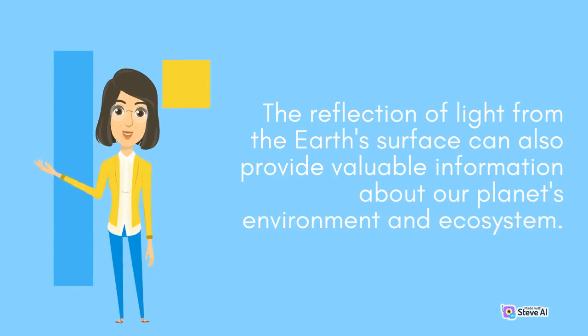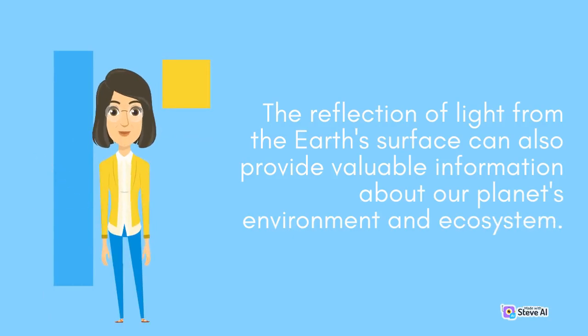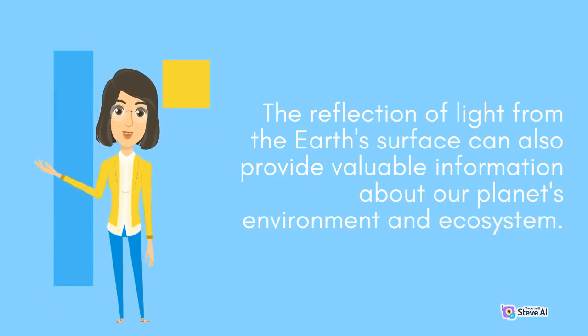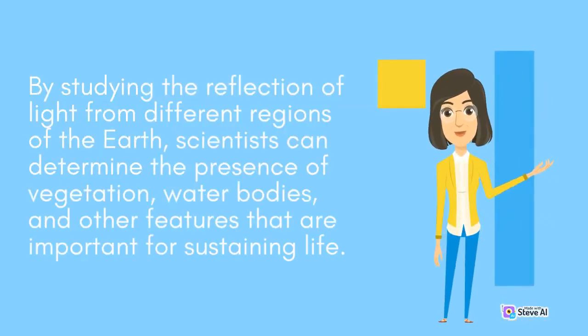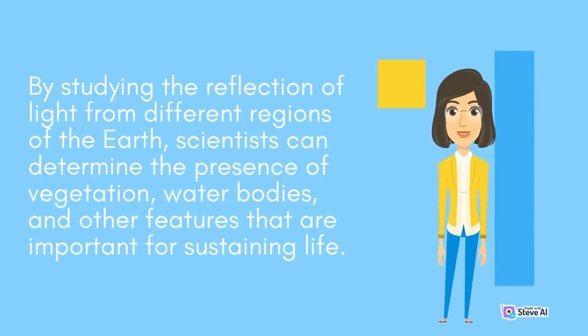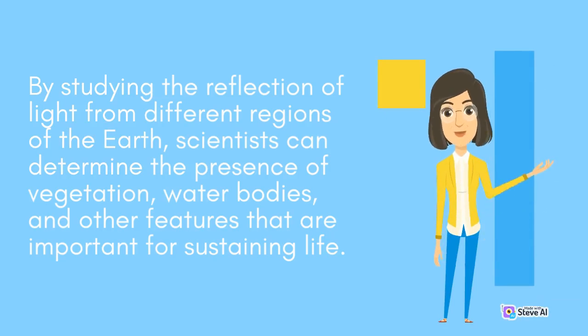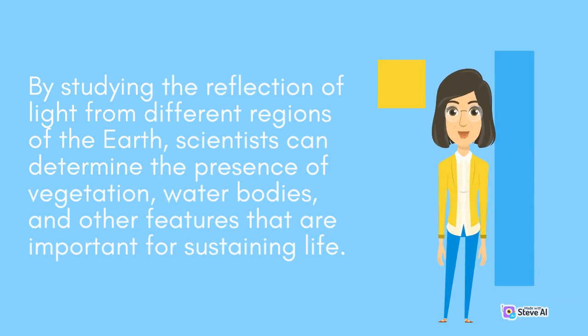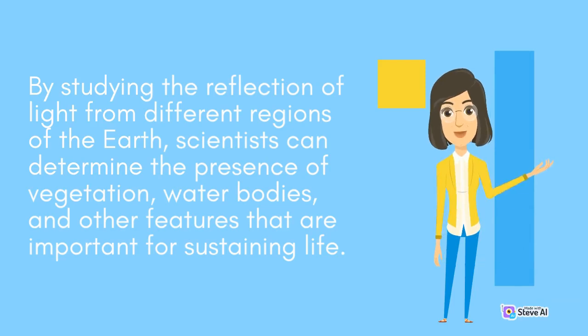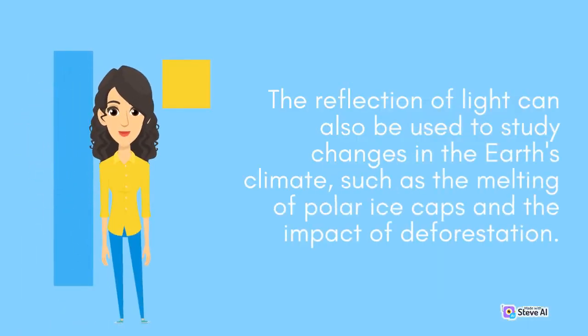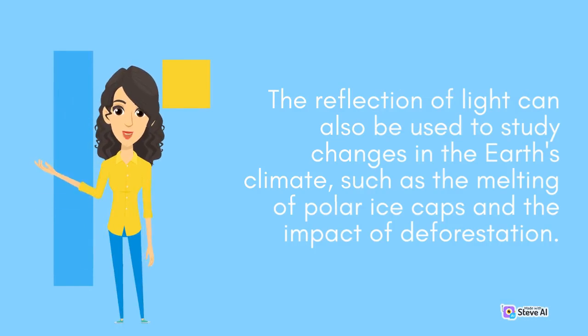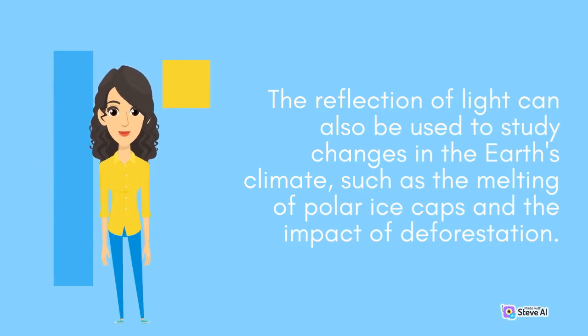The reflection of light from the Earth's surface can also provide valuable information about our planet's environment and ecosystem. By studying the reflection of light from different regions of the Earth, scientists can determine the presence of vegetation, water bodies, and other features important for sustaining life. The reflection of light can also be used to study changes in the Earth's climate, such as the melting of polar ice caps and the impact of deforestation.